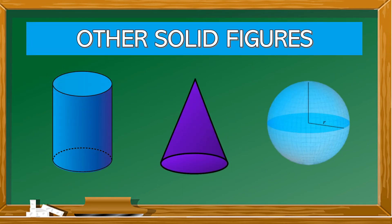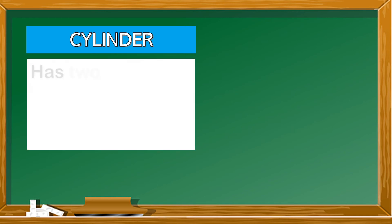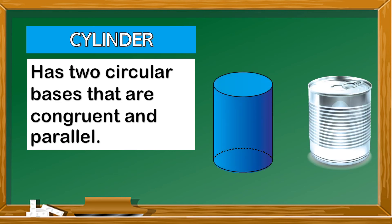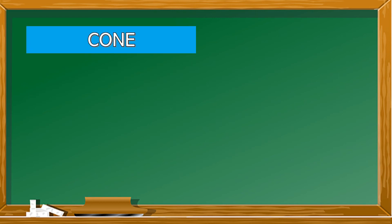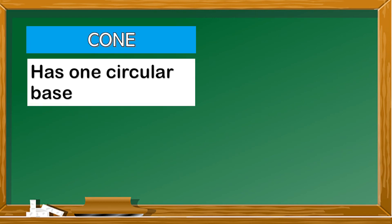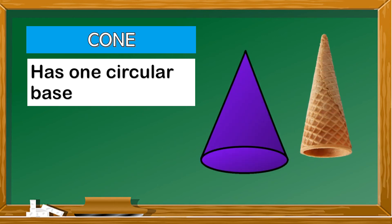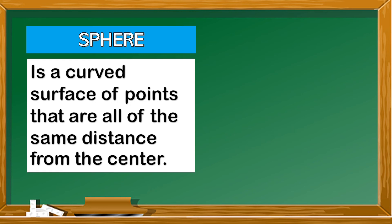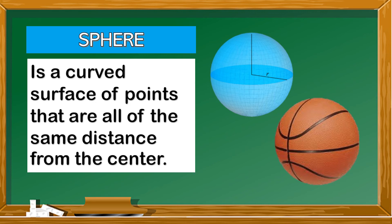Other solid figures. Cylinder: a cylinder has two circular bases that are congruent and parallel. Here is an example of a cylinder. Cone: a cone has one circular base. Here is an example of a cone. Sphere: it is a curved surface of points that are all of the same distance from the center. Here is an example of a sphere.